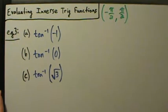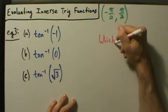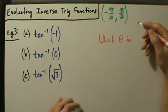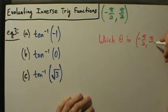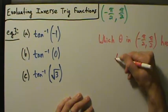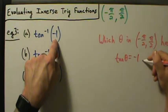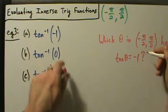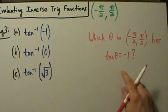We approach it the same way we've been approaching this — we ask ourselves that same question: which theta in the range of the inverse trig function has tangent of theta equal to negative 1?